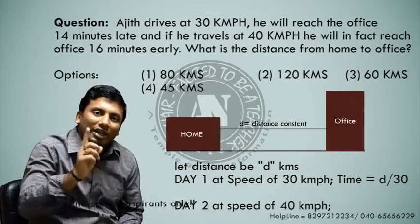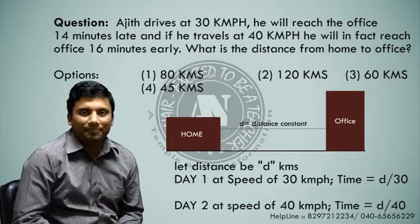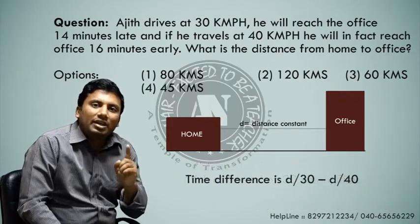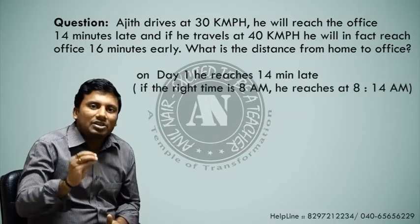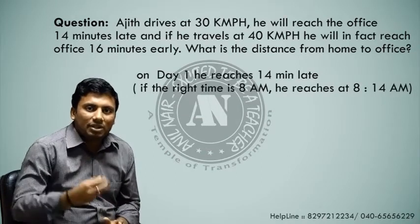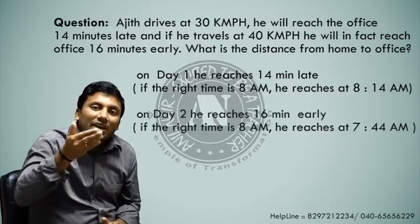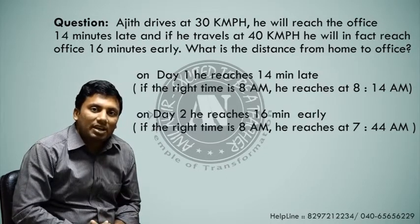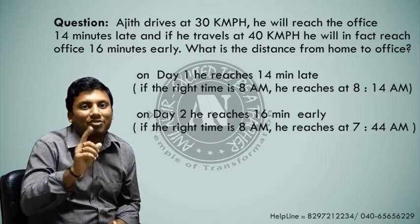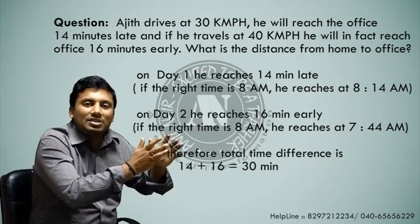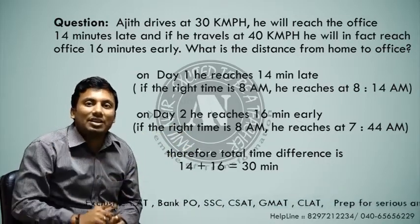Second day, he travels at 40 kmph, so his time will be d/40. The difference in time periods will be d/30 minus d/40. On day 1 he reaches the office 14 minutes late — if office timing is 8 o'clock, he reaches at 8:14. Next day he reaches 16 minutes early, meaning he reaches at 7:44. So we get the equation d/30 minus d/40 equated with 30 minutes — because 7:44 to 8:14 spans 30 minutes.